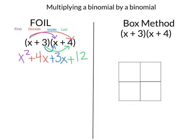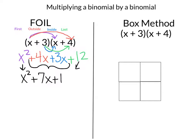Now that I've distributed using that FOIL method, I'm going to combine like terms. When I look at my problem, I don't have any other X squared, so I'm just going to bring it down. But if I look at my X's, I have a 3X and a 4X that I can combine. So 4X plus 3X is going to give me 7X. Then I have my plus 12, and I'm just going to bring it down because there are no other constants to combine with it. And there is my answer — a trinomial as a result of multiplying those two binomials.